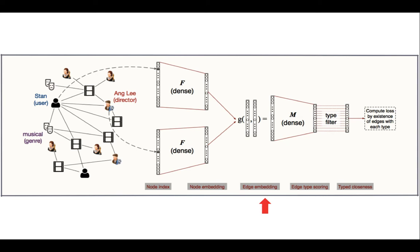In HEER, we first compose edge embeddings from corresponding node embeddings. Then, under different edge metrics, it calculates typed closeness for existing edges.